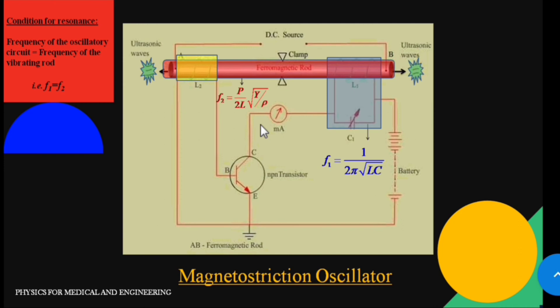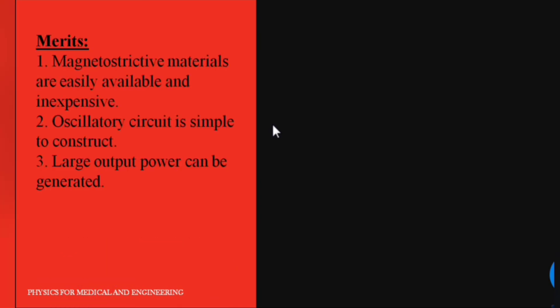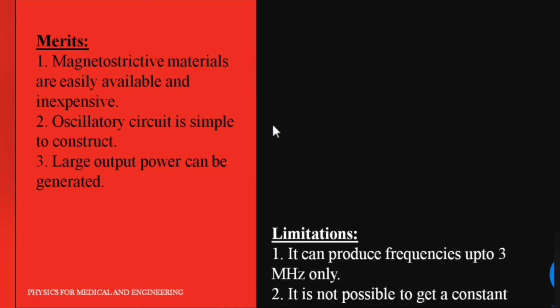So in this way the oscillator works. Now the advantages of these oscillators are: magnetostrictive materials are easily available and inexpensive, the oscillator circuit is simple to construct, and large output power can be generated.